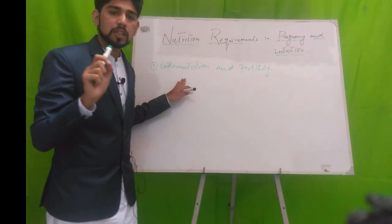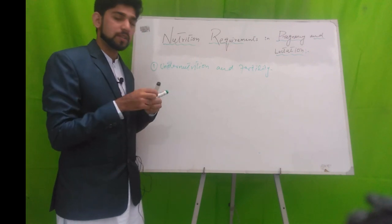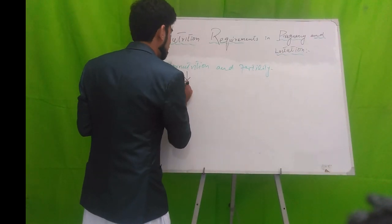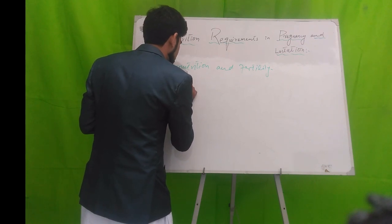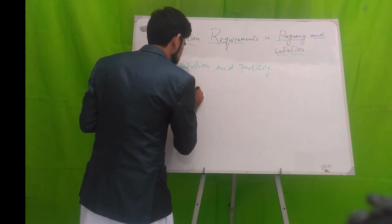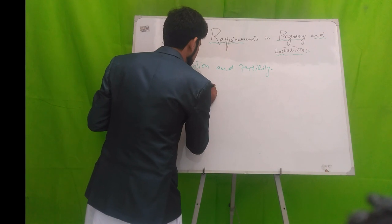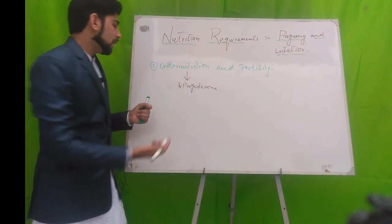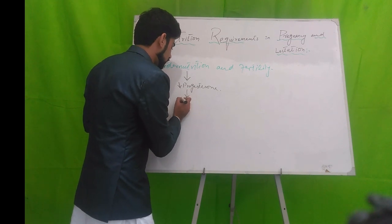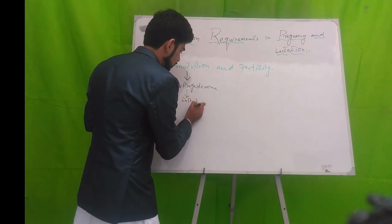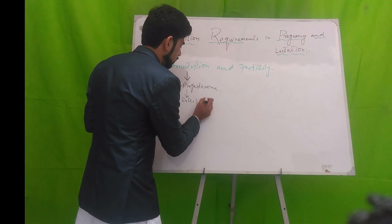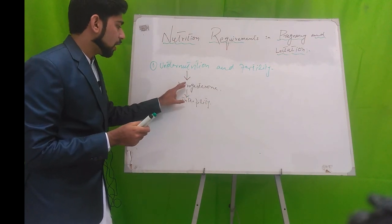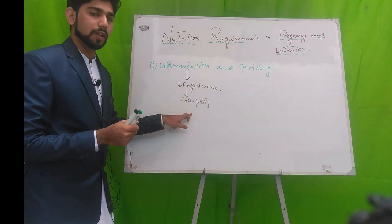If the female is undernourished in the preconception stage, it can lead to a decrease in the progesterone level, and a decrease in progesterone level can lead to infertility. Now we need to understand the link — how decreased progesterone leads to infertility.